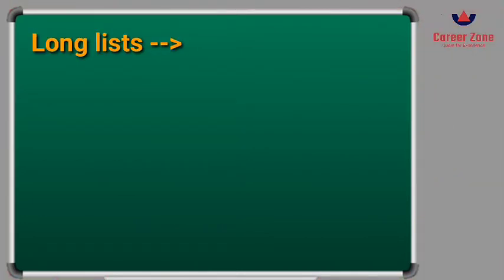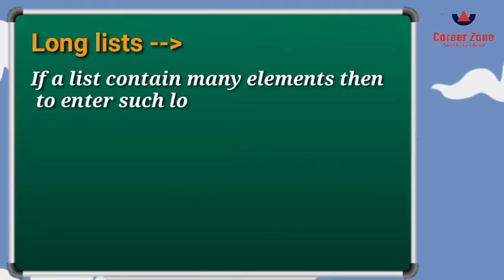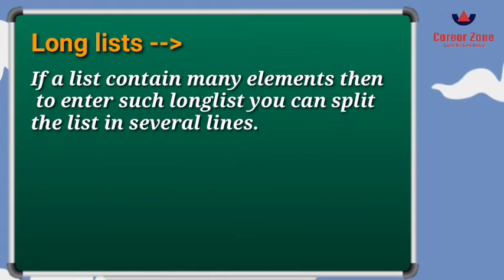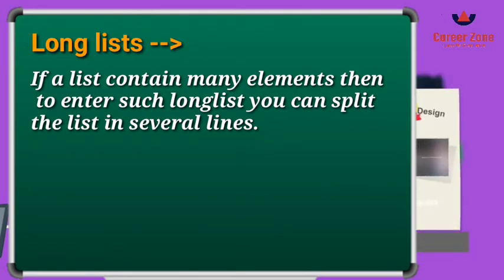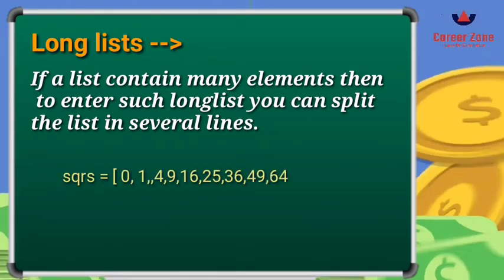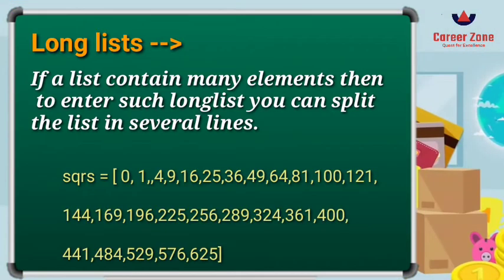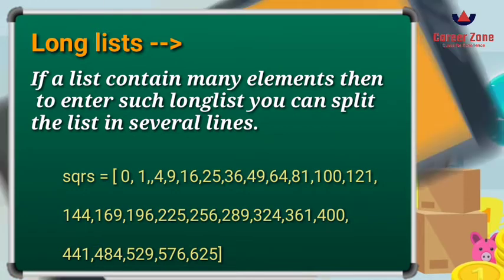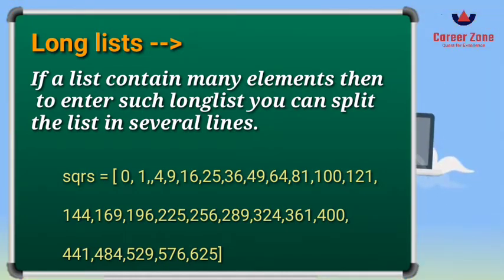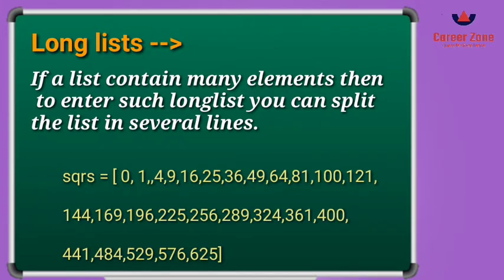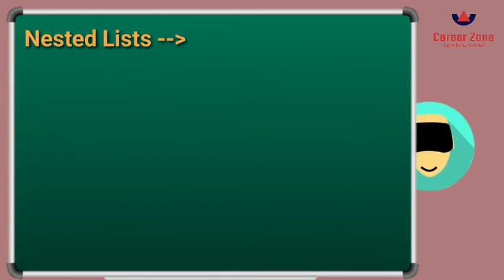Now let us see what a long list is. If a list contains many elements, you can write it across multiple lines. For example, I have written a list called 'sqrs' which contains the squares of numbers starting from zero. Since the data is long and contains many items, I have written it across three lines. This is how you can create a long list.